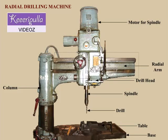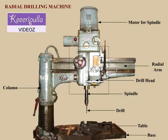The drill head has a motor which drives the drill spindle. The drill head can be adjusted radially — it can be moved along the guideways of the radial arm, adjusted to the correct drilling position, and then locked.